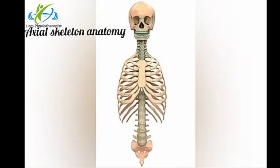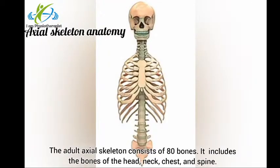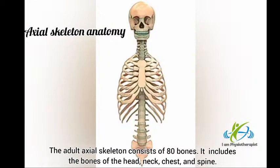Axial skeleton anatomy: The adult axial skeleton consists of 80 bones. It includes the bones of the head, neck, chest and spine.